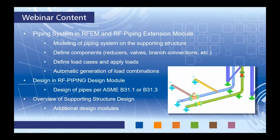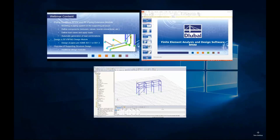Regarding the webinar content for the next hour: we'll go through a piping system example in RFEM utilizing our RF Piping extension module. We'll model a piping system on a supporting structure, define components such as reducers, valves, branch connections, and more. We'll define load cases and apply loads to these piping members, and automatically generate load combinations according to the ASME standard. We'll also use the RF Piping Design module for utilization ratios and stress checks per ASME B31.1 or B31.3. Lastly, I'll touch on supporting structure design per AISC or ACI.